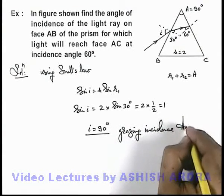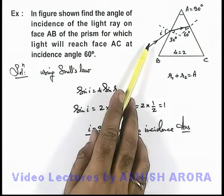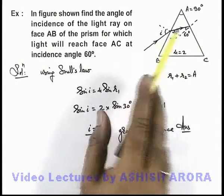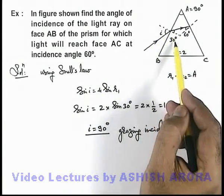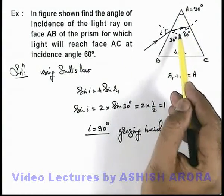That will be the answer to this problem. When the incident light ray will be incident on the face AB in grazing fashion, then only the value of first refraction angle would be 30 degrees, and the light ray will reach the face AC at an angle of 60 degrees.